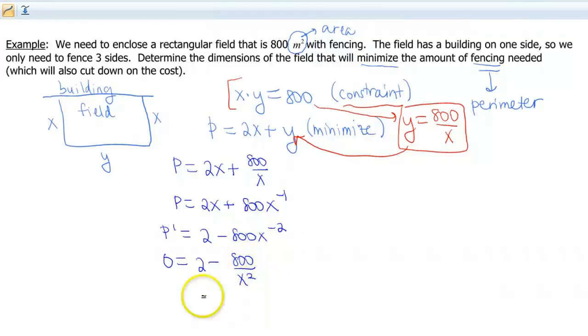Now we gotta do some algebra. So I'm gonna go ahead and scoot this 800 over x squared to the other side. It was negative, so it's now gonna become positive. Multiply both sides by x squared to get that out of the denominator. So 800 equals 2x squared. Divide both sides by 2. So 400 is x squared.